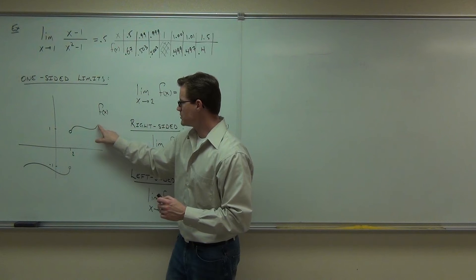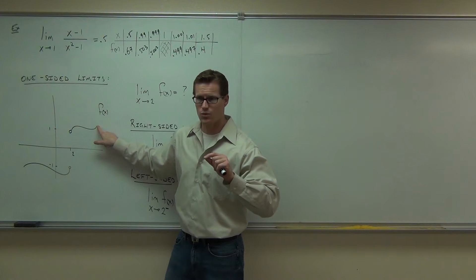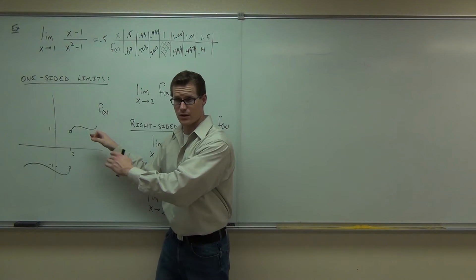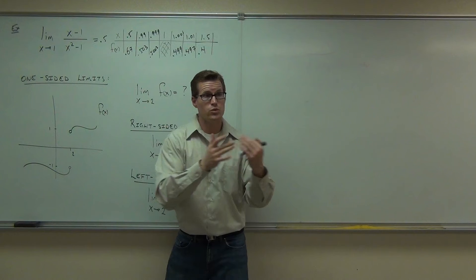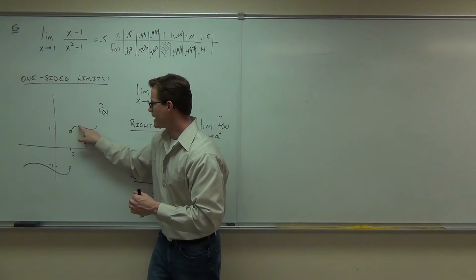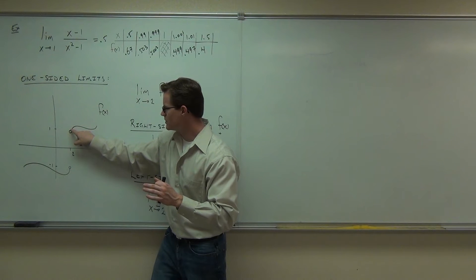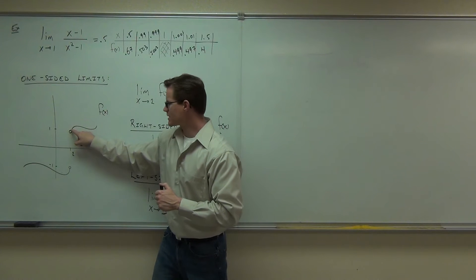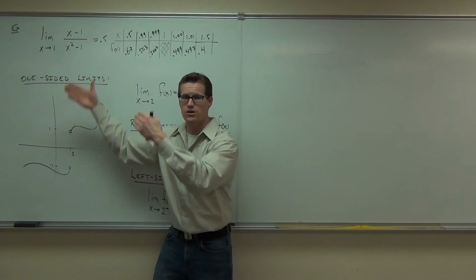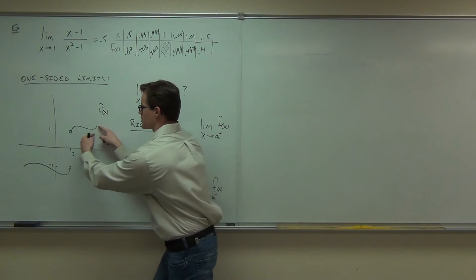Follow the function along. I need you to tell me the height of my finger when I get really close to this value. Am I going from the right or the left in this case? From the right. It's always from the right — not to the right, from the right. From the right, the height of my finger is a little above one. What's the height of my finger going towards as I slow down? It's trying to get to one. It's not that the limit is going to be two — it's asking what happens to the value of the function. The value is your y-axis.